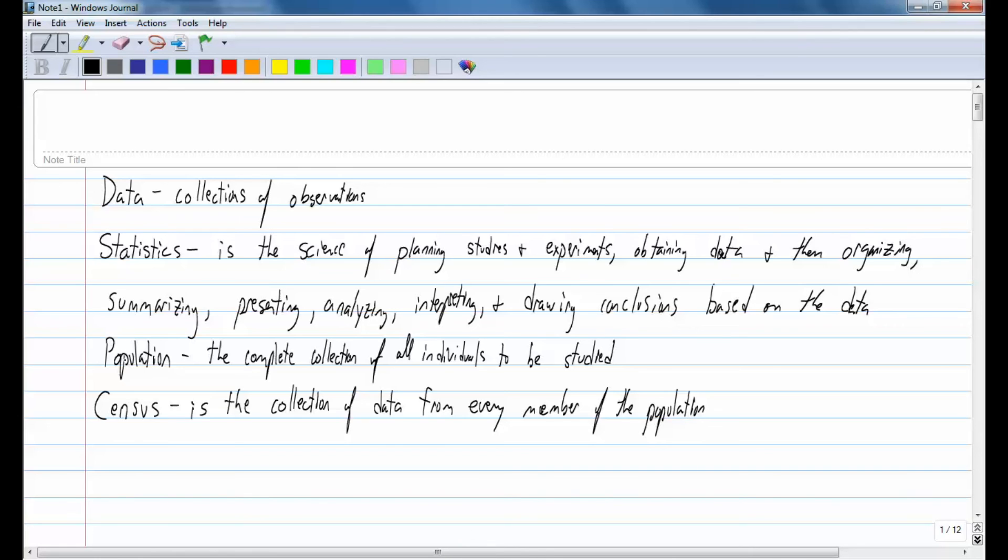A census is the collection of data from every member of the population. Whenever we get data, we collect data, usually we either collect the data from population or we take a sample. A sample is a subcollection of members selected from a population. For example, if I was doing a study on this class and I took a sample of this class, maybe I just chose Ms. Ray, Mr. Funk, Ms. Smith, then that would be a sample from the population of this entire class. So, it is a subcollection, like a small subset of the entire set.